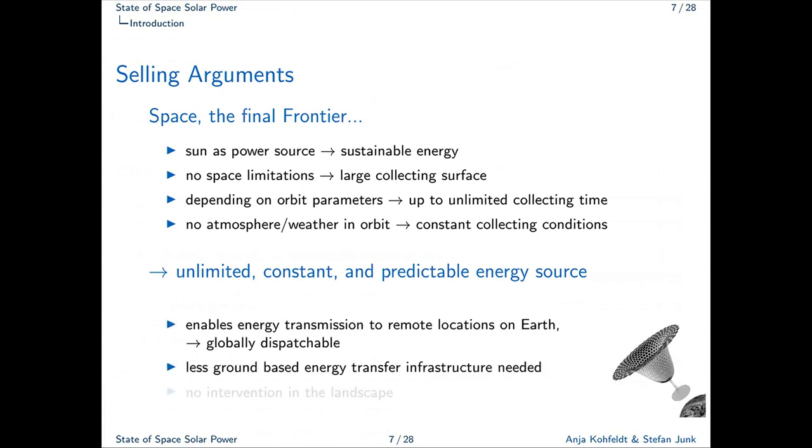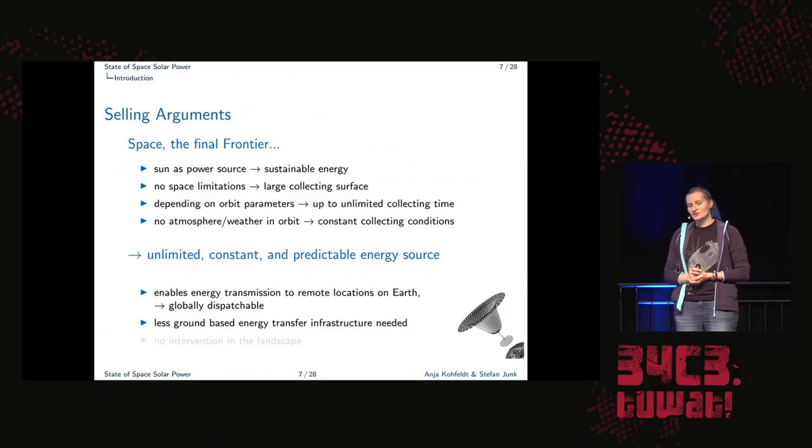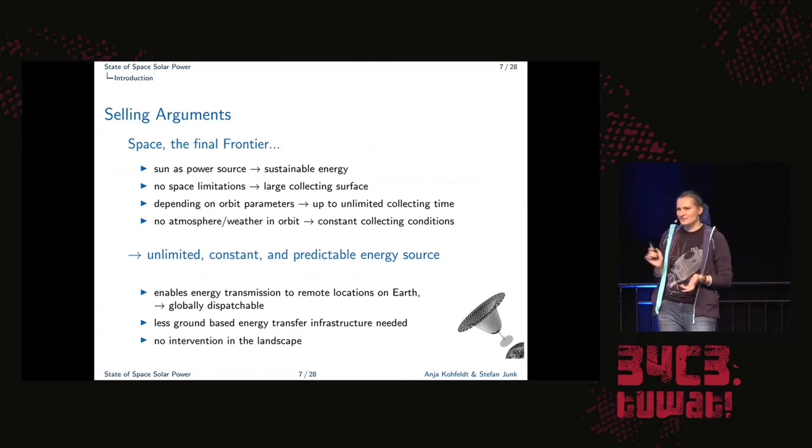In addition, we don't need that much infrastructure to distribute the power on earth. For example, if you would compare that to a huge solar field, for example, in the Sahara, you would need a lot of cables in order to get the power, for example, to Europe. This comes with some problems. But also, if solving the problem of power transmission, you can get energy to very, very remote locations on earth and you also can get the energy there quite quickly. And, of course, the intervention in the landscape is, let's call it minimized to a certain way.